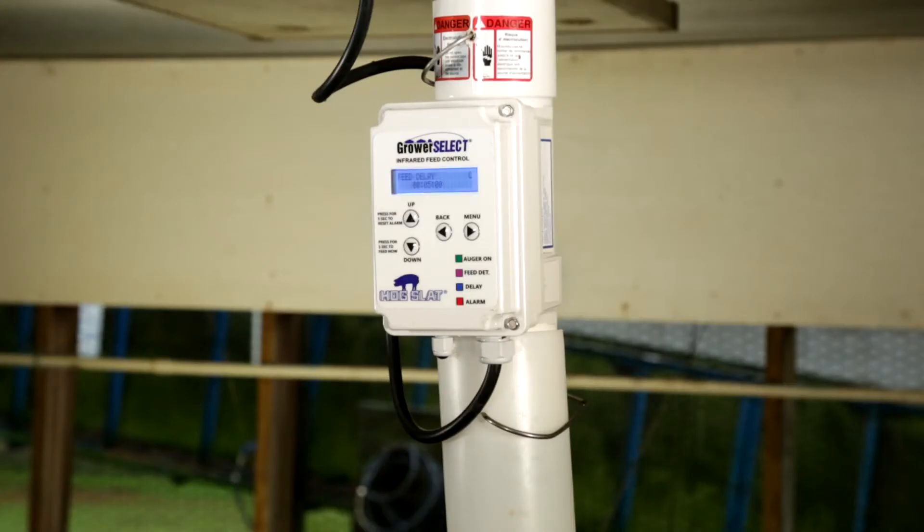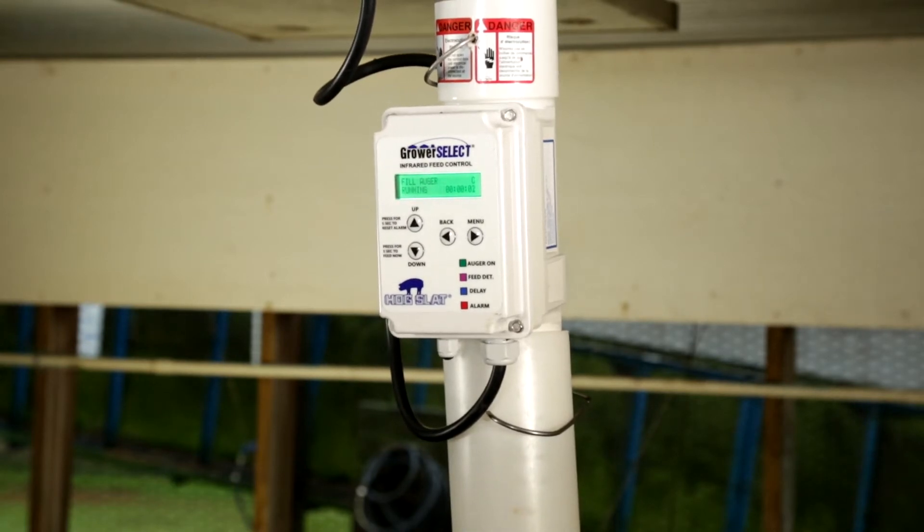The unit is self-contained with a relay contact that connects directly to the feed system control box. Installation into your existing system is simple.